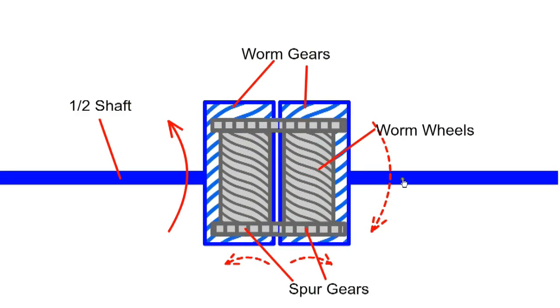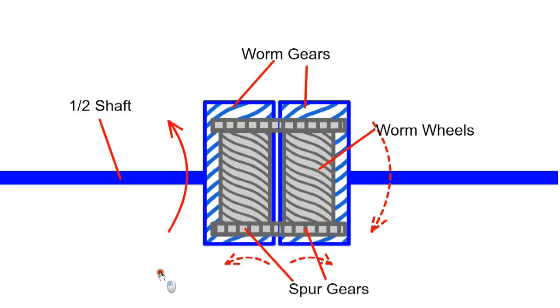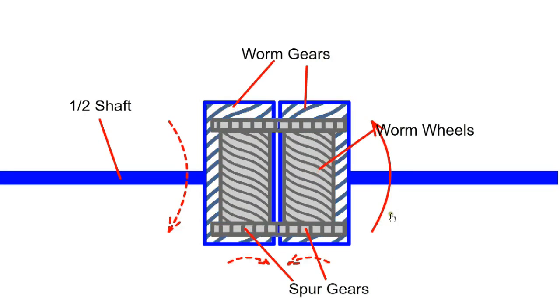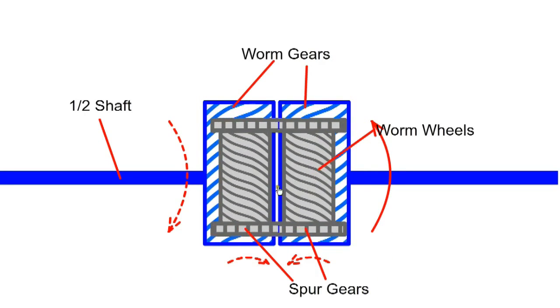Which in turn will drive the other wheel via the spur gears. We'll have a similar effect if we rotate in the opposite direction.